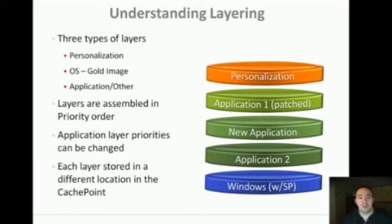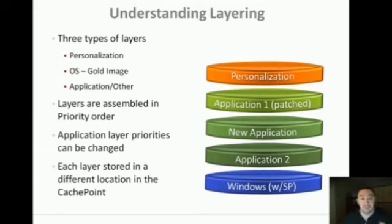Right now there are three types of layers: the OS layer, which is always at the bottom; the personalization layer, always at the top; and application layers. I'd like to clarify what goes in each of these, and tell you about their order and priority.